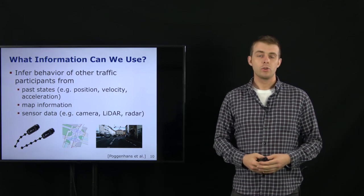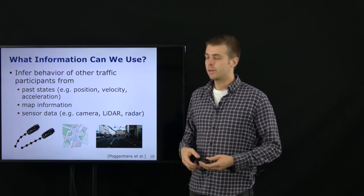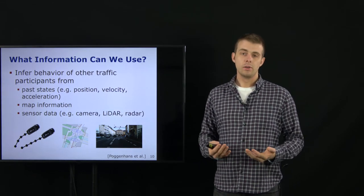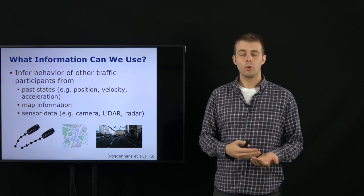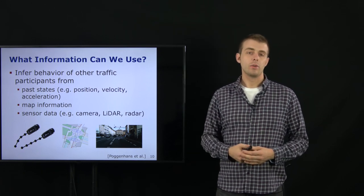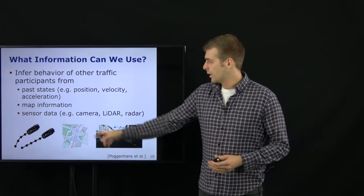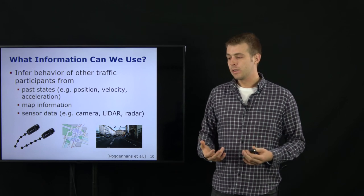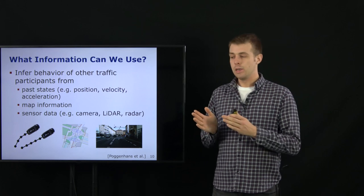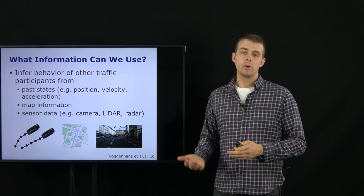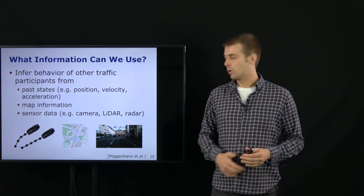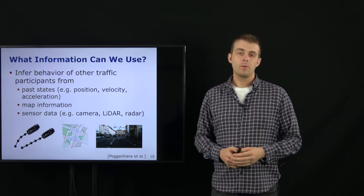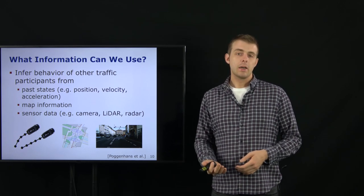What information can we use to estimate the behavior of others? One common input is past states of other traffic participants — position, velocity, acceleration, or orientation — which usually come from a perception system with detection and tracking. We can also use map information: with an HD map we know where lanes are and about traffic lights. For example, if a car is on a lane dedicated for lane change, we know it is most likely going to do a lane change. Finally, we can use raw sensor data from camera, lidar, or radar — for instance, detecting a turn signal or braking lights.